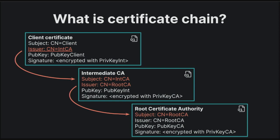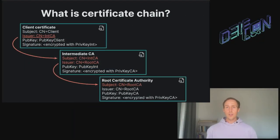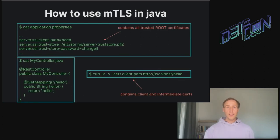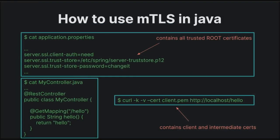In order to check the validity of the certificate, the server should build a trusted chain from the client certificate to a trusted root certificate. The client and intermediate certificates are normally sent by the clients, whereas the server only needs to know about trusted root certificates. Let's see how to use MTLS in an example Java web application. In the bare minimum, the developers only need to enable it in the application settings and specify the location of all trusted root certificates. From the client perspective, such as curl, you need to specify what certificate is sent to the server.